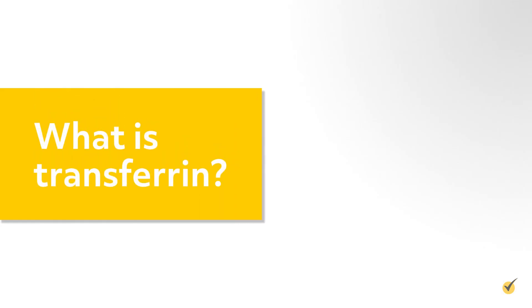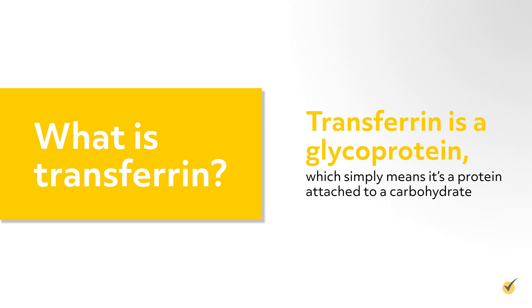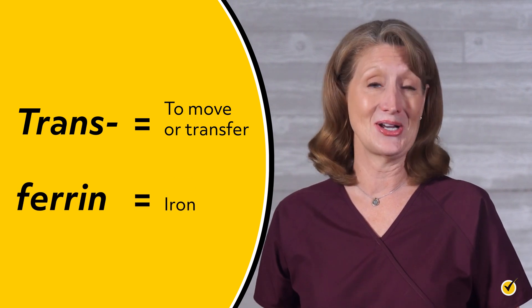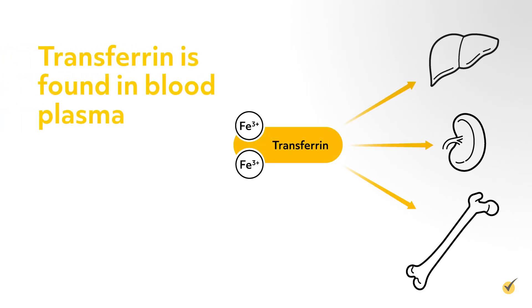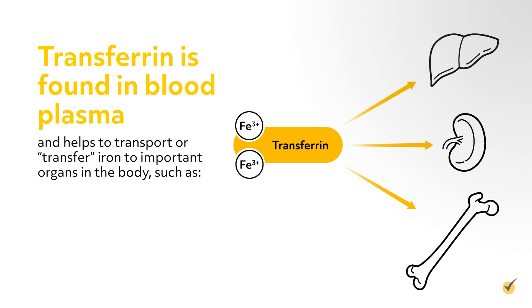So what is transferrin? Transferrin is a glycoprotein, which simply means it's a protein attached to a carbohydrate. You can figure out what it does just by taking a closer look at its name — trans means to move or transfer, and ferrin means iron. Transferrin is found in blood plasma and helps to transport iron to important organs in the body such as the liver, spleen, and bone marrow.